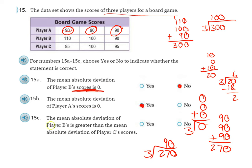And then 15C. The mean absolute deviation of player B's is greater than the mean absolute deviation of player C's. Okay, so let's finish off. This was our mean absolute deviation of player B. Let's go ahead and finish that off now because we do need that information now. That's going to be 6 again, so it's just going to be 6.6 repeating.